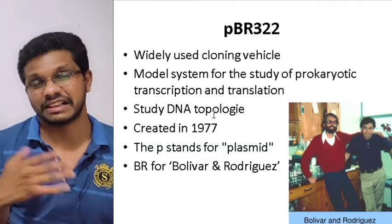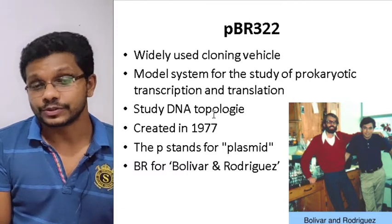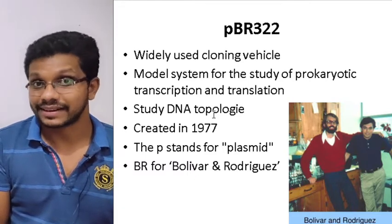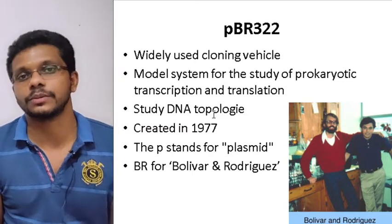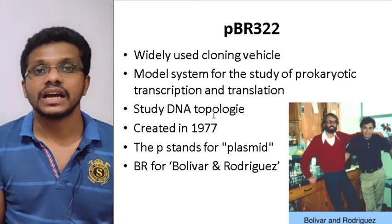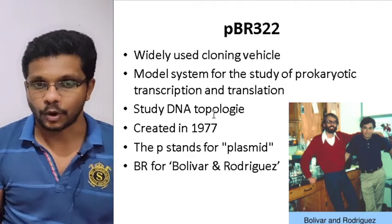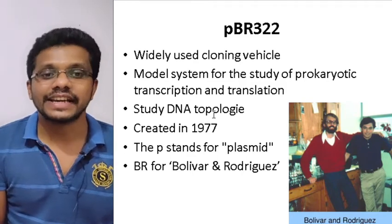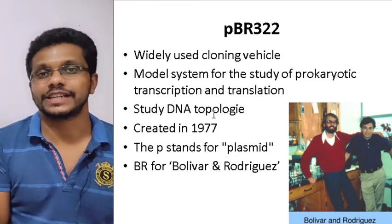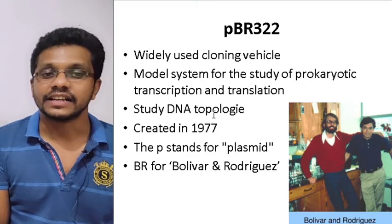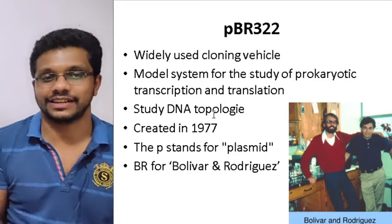PBR322 is a classical vector. It is widely used and was used as a model system for prokaryotic transcription and translation related studies. It has contributed very much to basic molecular biology. It is also used for studying DNA topology. It was actually created in 1977, during one of the initial phases of recombinant DNA technology, and it was one of the classical vectors — a perfect vector.